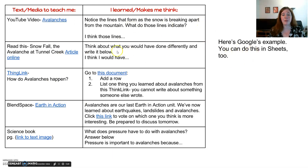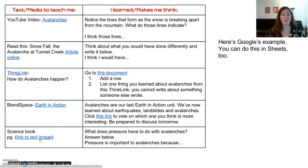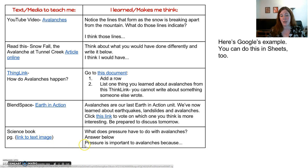This was Google's example — you can do this in Sheets as well. Here you've got the text and media: a YouTube video, a reading, and something called Blend Space which looks interesting. This is a link to a text image — you could actually put in the image itself if you went to Insert Image. And then here the kids comment.